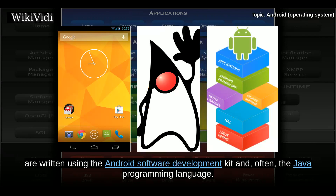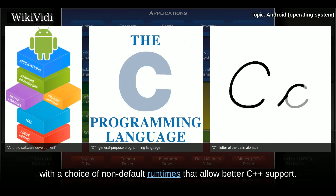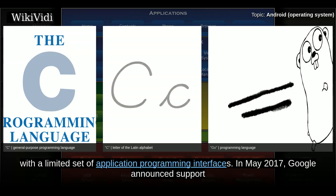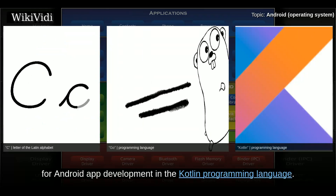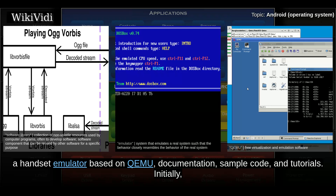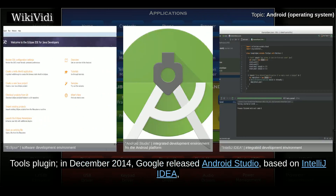Applications which extend the functionality of devices are written using the Android software development kit and often the Java programming language. Java may be combined with C or C++, with a choice of non-default runtimes that allow better C support. The Go programming language is also supported, although with a limited set of APIs. In May 2017, Google announced support for Android app development in the Kotlin programming language. The SDK includes a comprehensive set of development tools including a debugger, software libraries, a handset emulator based on QEMU, documentation, sample code, and tutorials. In December 2014, Google released Android Studio based on IntelliJ IDEA as its primary IDE for Android application development.